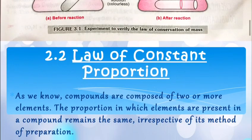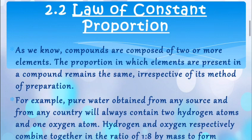Continuing further, we will take the next law of constant proportion. Now, according to law of constant proportion, we know compounds are composed of two or more elements. The proportion in which elements are present in the compound remains the same, irrespective of its method of preparation. For example, pure water obtained from any source and from any country will always contain two hydrogen atom and one oxygen atom.